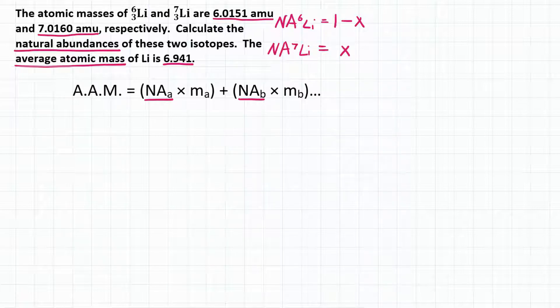Why 1 minus X and X? Well, 100% as a decimal is 1. So if we have, let's say, a percent of 40% for our natural abundance for lithium-6, that would be 0.4. 1 minus 0.4 is going to give us 0.6. So we would have 40% and 60% for our two natural abundances. But we have to solve to actually figure out what X is first.